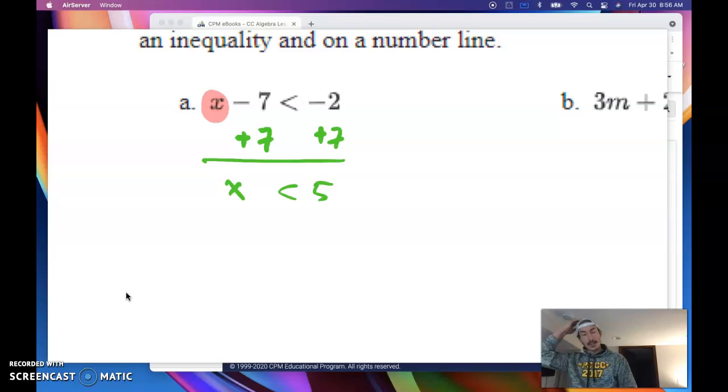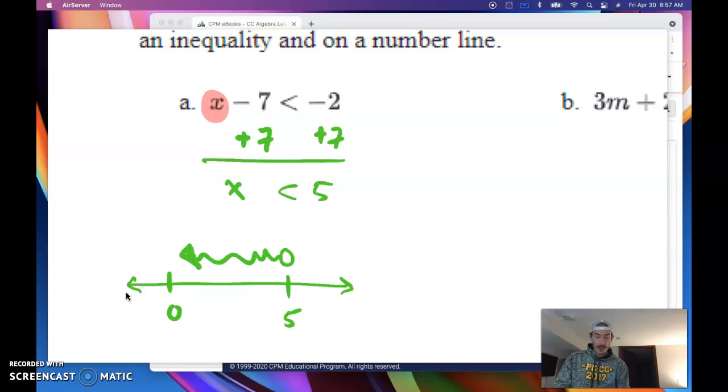Now X is by itself. I have identified that boundary point. I can do some graphing. We put 0 on there for reference. We put and label the boundary point on there. It is a less than inequality. So I know my boundary dot should be open. And I do need to shade less than, which is indicating that I want to shade that direction. I do have an arrow indicating that my shading does continue.